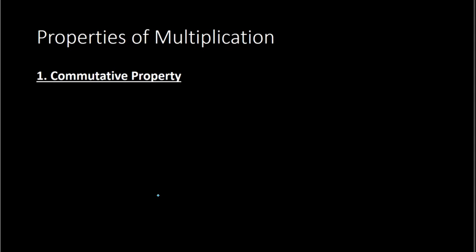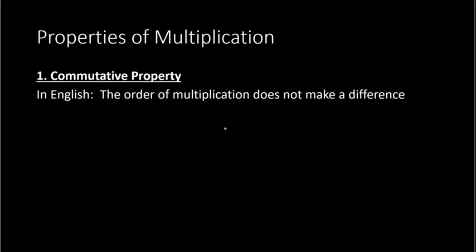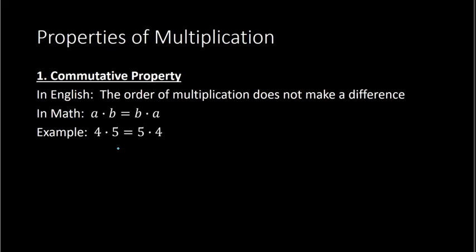With multiplication, there are some properties that will always be true. The first is called the commutative property. This property says that the order of multiplication does not make a difference. In math notation, we would say A times B equals B times A. With actual numbers, we have 4 times 5 equals 5 times 4. It does not matter if the 4 is first or the 5 is first. And this is your commutative property.